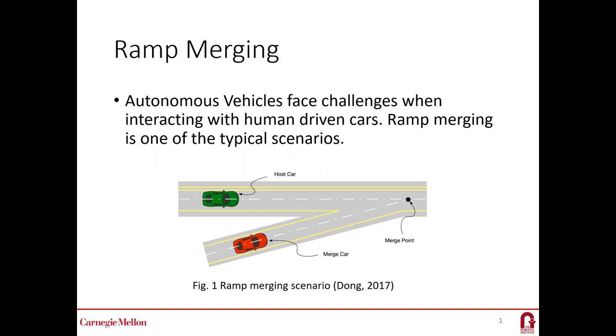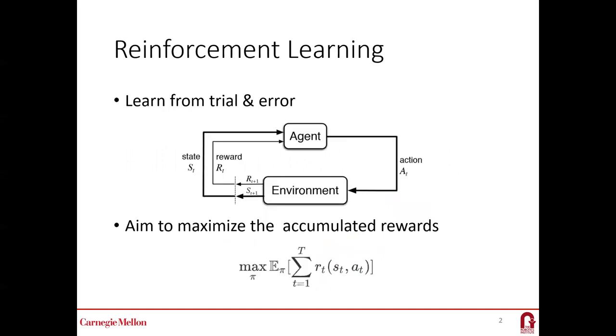In this work, we make a trial to tackle this problem using reinforcement learning. Reinforcement learning is a machine learning paradigm which learns from trial and error. The agent outputs actions to the environment and receives rewards from it. The agent is optimized to obtain a policy that maximizes long-term accumulated rewards.